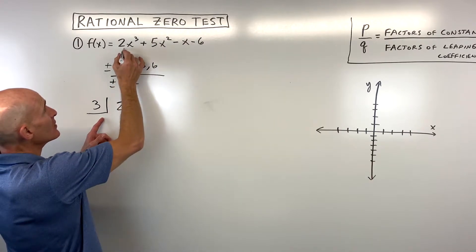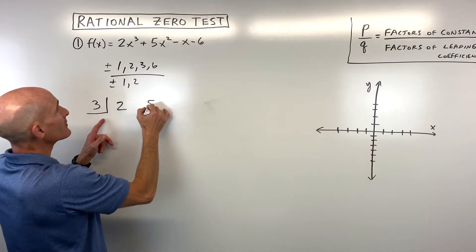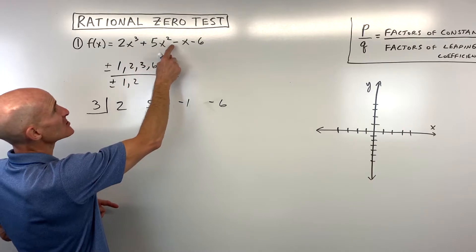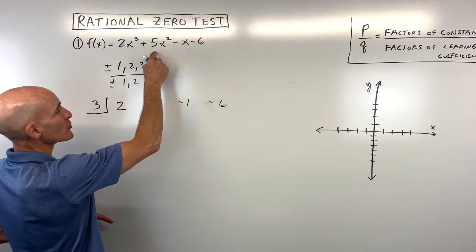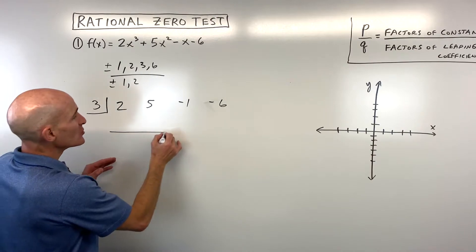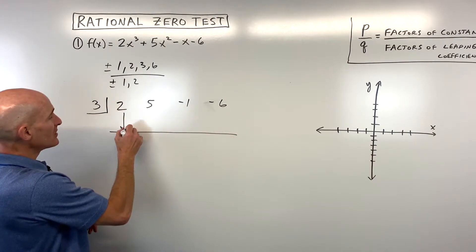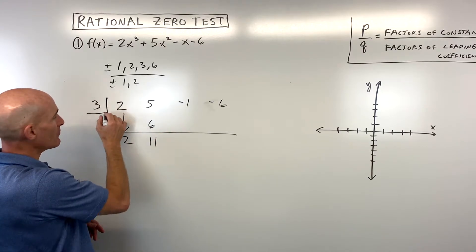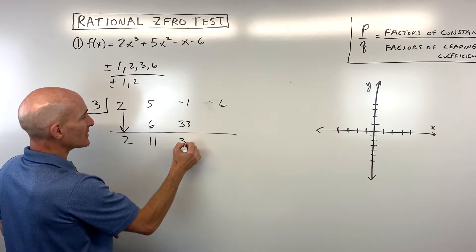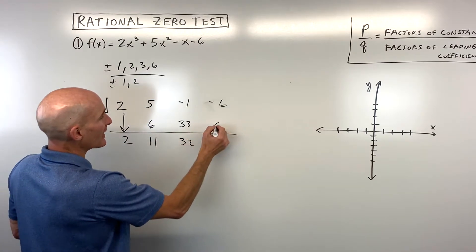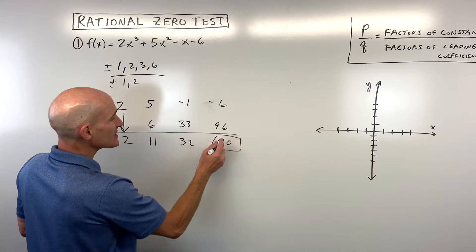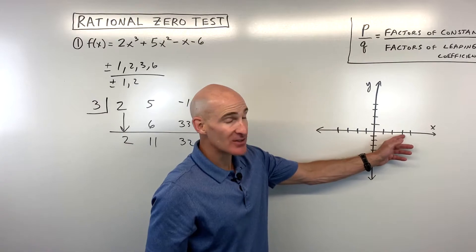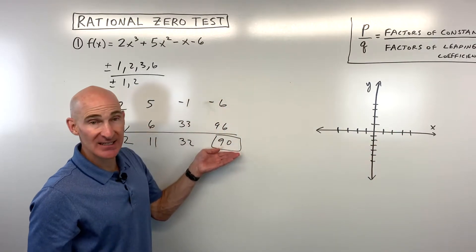We do our synthetic division. We take the numbers in front of the variables: 2, 5, negative 1, and negative 6. Remember, if there are any missing terms — like if I go from x cubed to x to the first — I have to put a zero for the missing term. We drop down the first number, multiply on the diagonal, add straight down, and repeat. If the last number comes out to zero, that tells us 3 is a zero. But in this case, it didn't come out to zero, so 3 is not a zero.